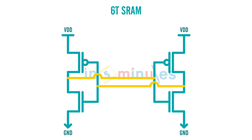Let's label all the transistors. Let this be P1, this be P2, this be N1, and this be N2. Let's call this node as node A and this node as node B, at the output of both these inverters.